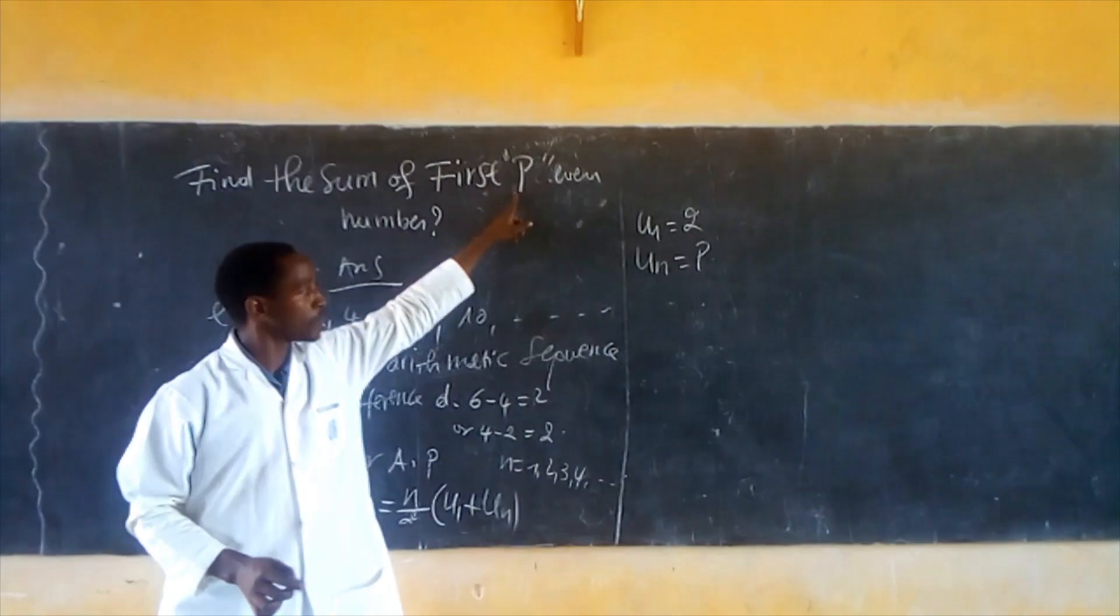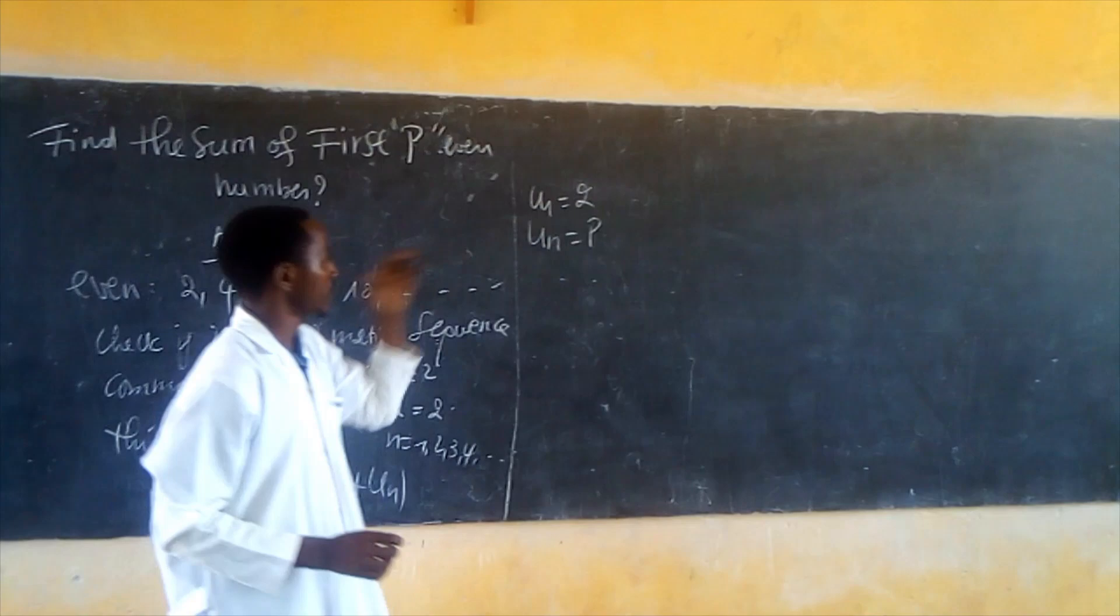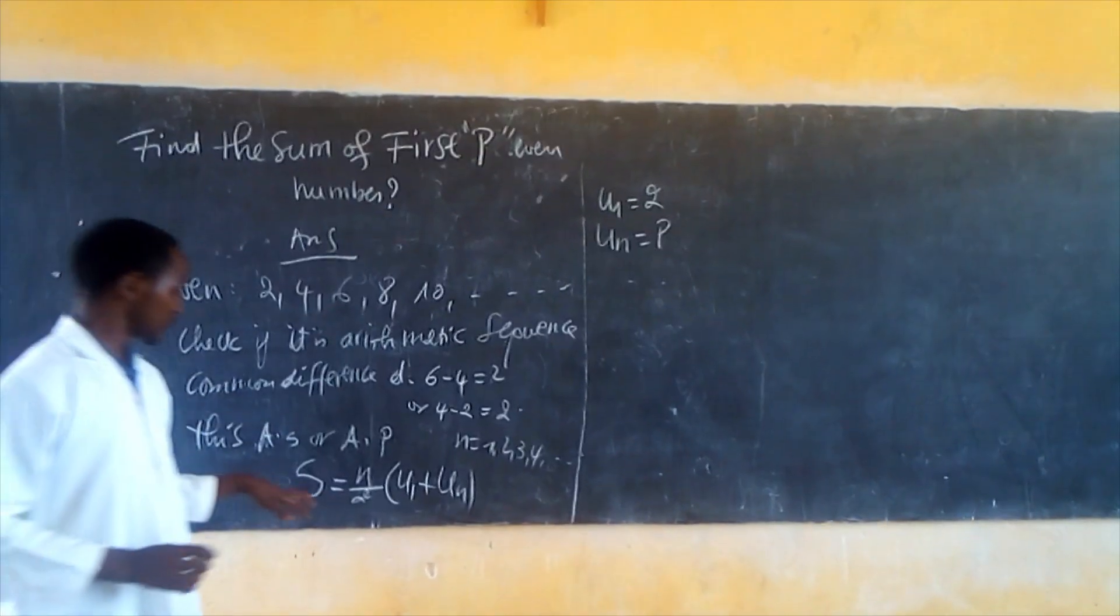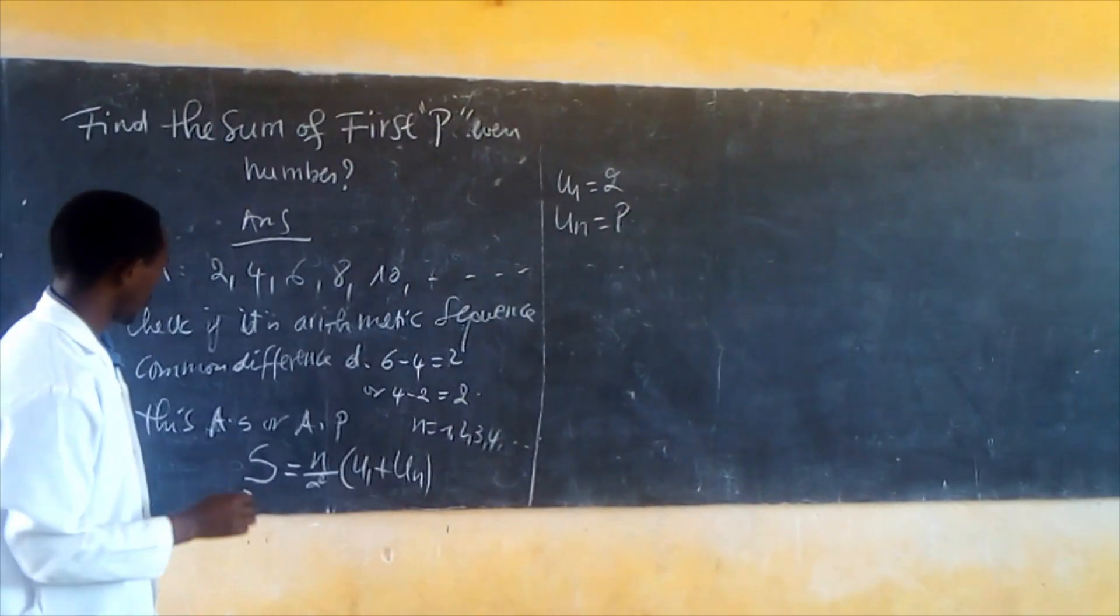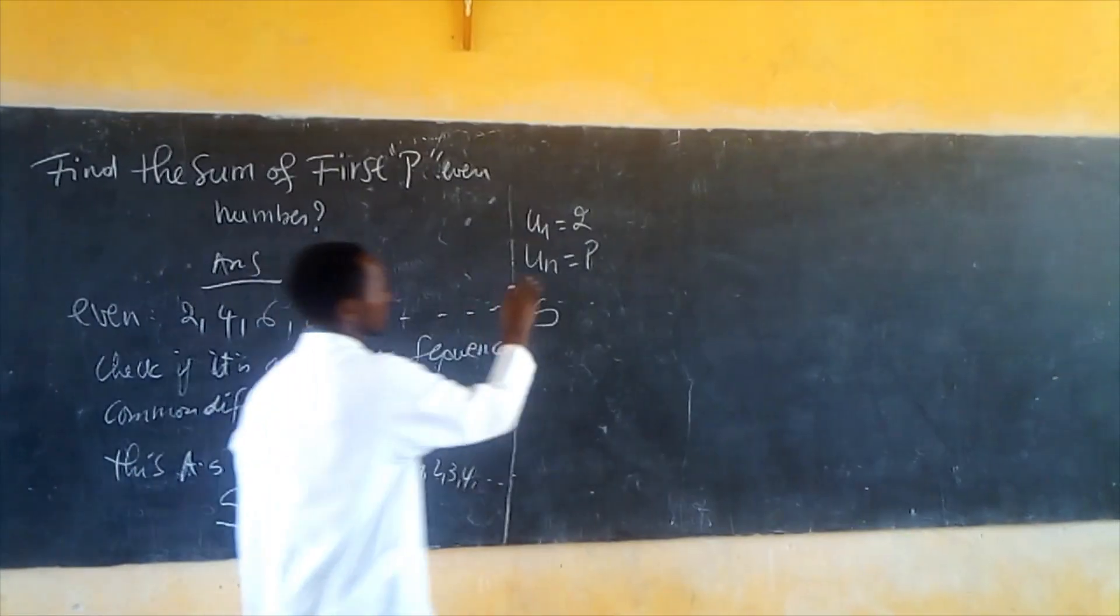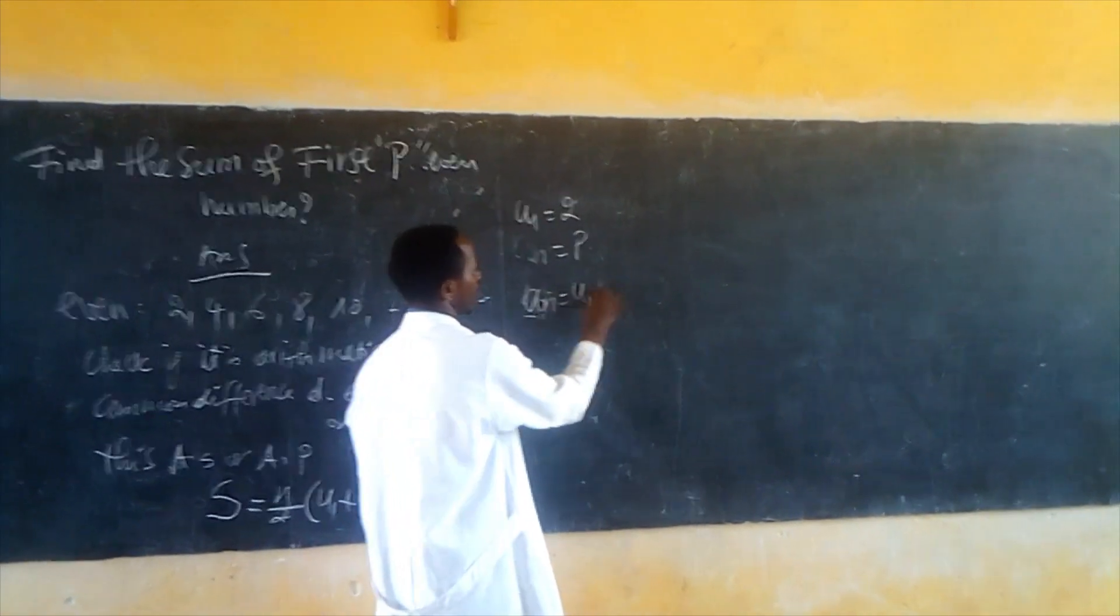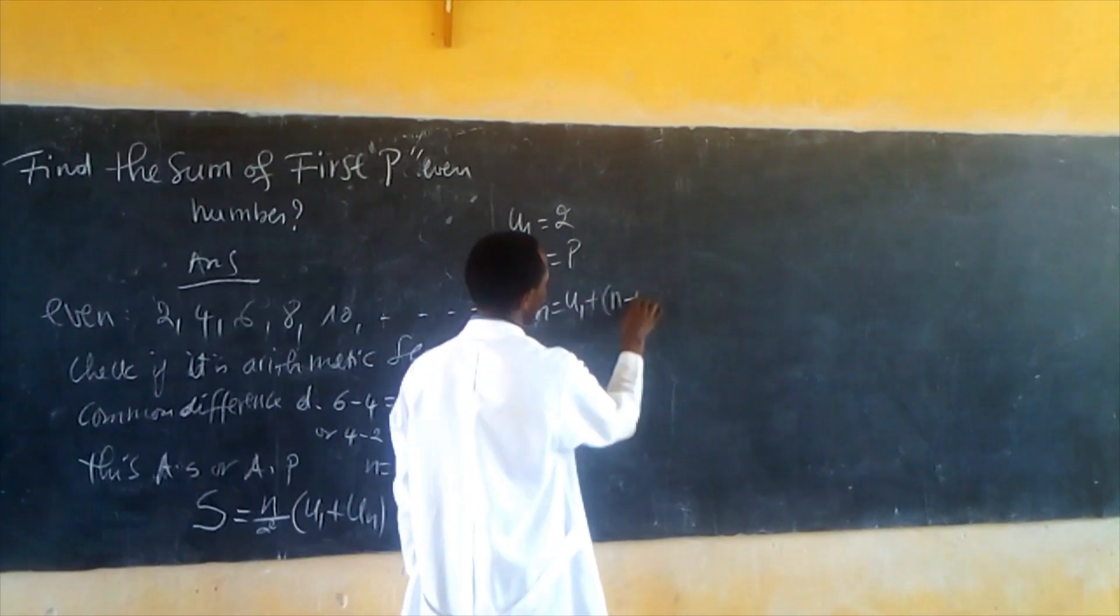Replace the value of n by P. So S equals... Un is given by the formula U1 plus (n minus 1)D.